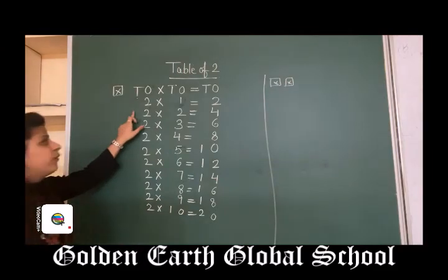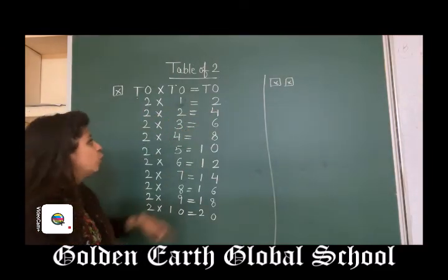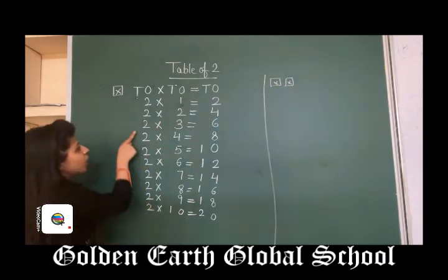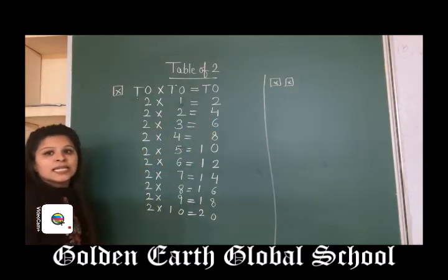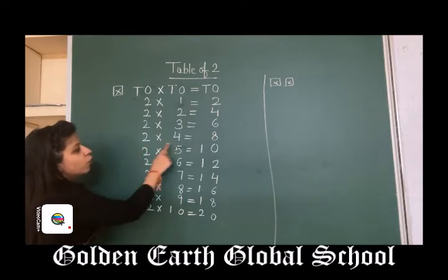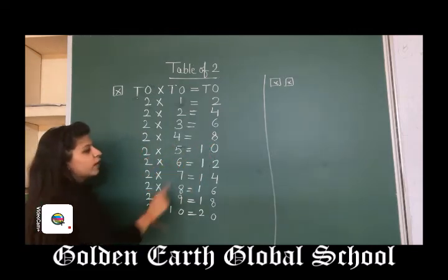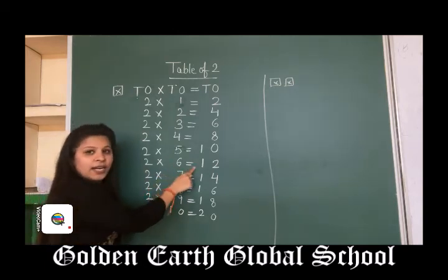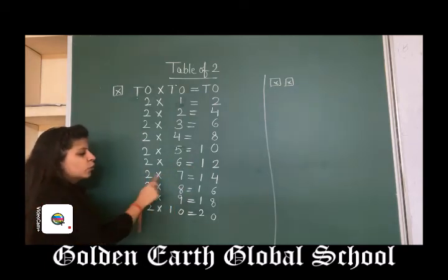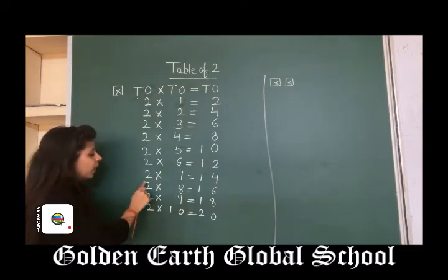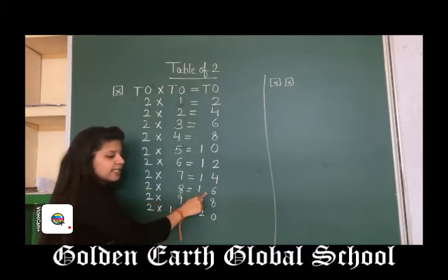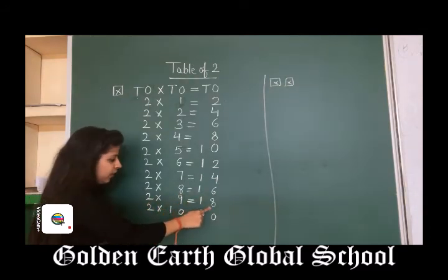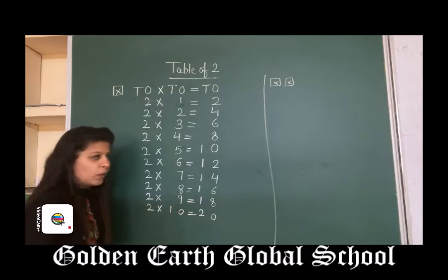Now repeat with me. 2, 1s are 2. 2, 2s are 4. 2, 3s are 6. 2, 4s are 8. 2, 5s are 10. 2, 6s are 12. 2, 7s are 14. 2, 8s are 16. 2, 9s are 18. And 2, 10s are 20.